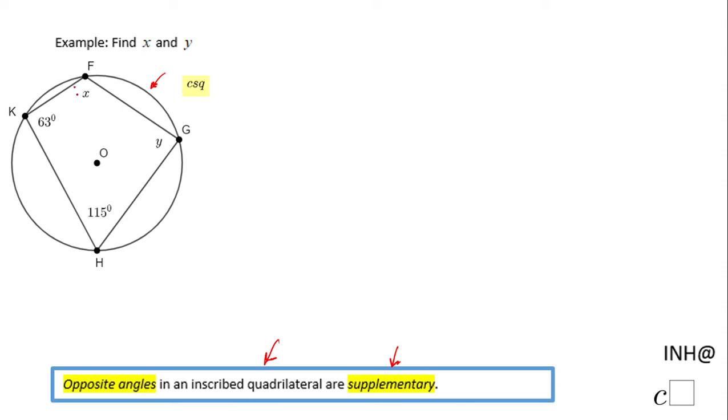One angle is this one, angle F, and the other one is angle H. These two angles, angle F and angle H, are supplementary, which means the sum of the measure of these two angles is 180 degrees.